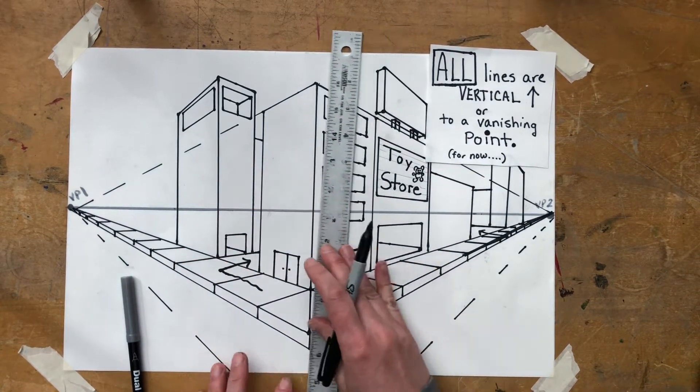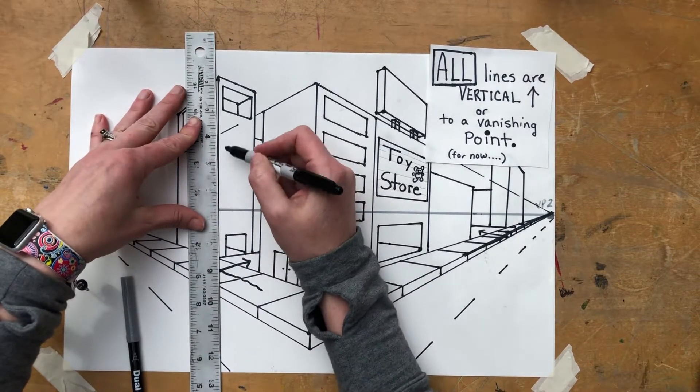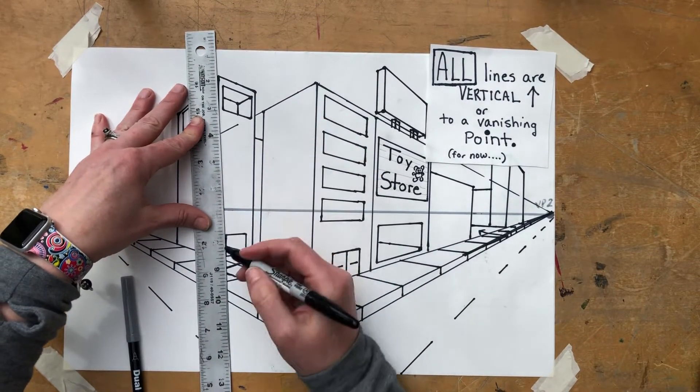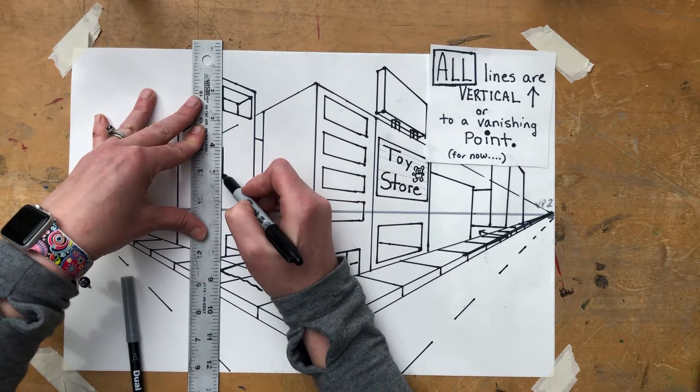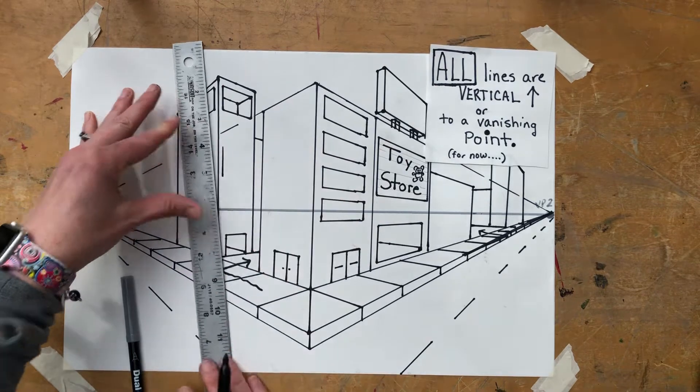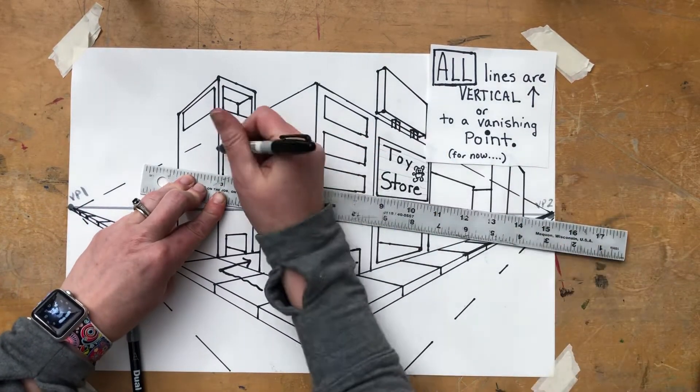And then later challenge yourself to draw one on the horizon line. But for right now to follow along, try to draw one higher than the horizon line. Give yourself some room. So I'm going to start with a vertical line pretending that I'm going to be drawing a window first, like pretend this is a window. But for a window, we would connect the top and bottom to VP2 and we'd be done.